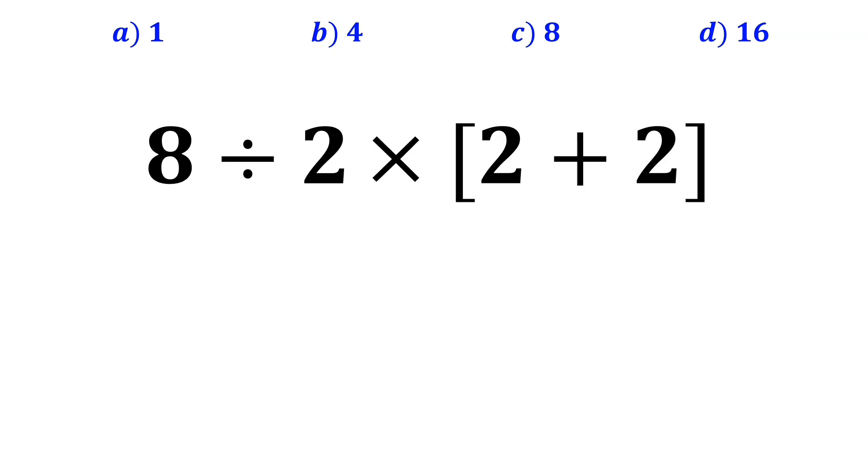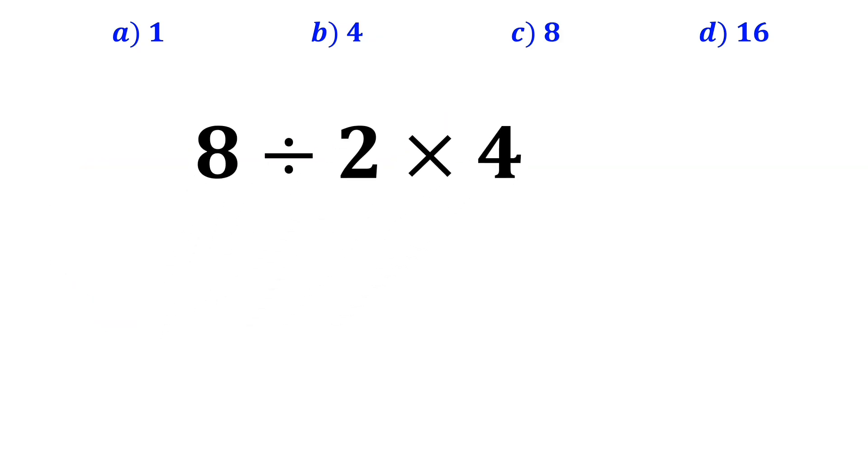Let's take a closer look and solve it together. In the first step, most people start by solving the expression inside the brackets and replace it with 8 divided by 2 times 4. In the next step, they go for the multiplication between 2 and 4 and replace this expression with 8 divided by 8, which finally gives them the answer 1.